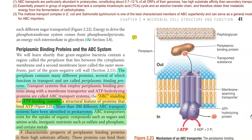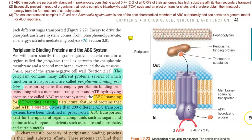ABC transporters are particularly abundant in prokaryotes, constituting about 0.7 to 12% of the open reading frames of their genome. They have higher substrate affinity than secondary transport systems and are essentially present in the group of organisms that usually lacks the complete TCA cycle and electron transport chain.